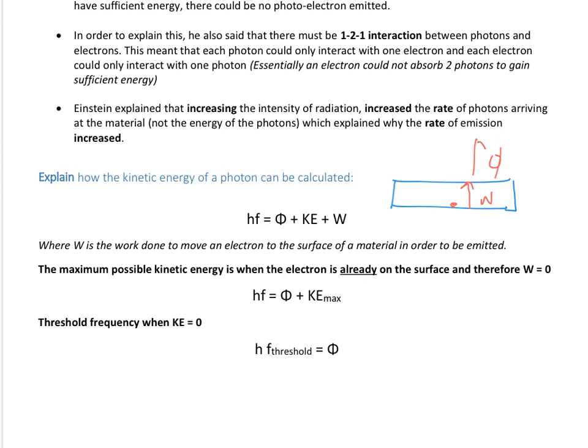If we want to know what the threshold frequency is, that's the condition where it goes from not being emitted to being emitted. The transition point is when your kinetic energy is zero - on the point of escaping. So you get that Planck's constant times the threshold frequency is equal to the work function - they're directly connected together.